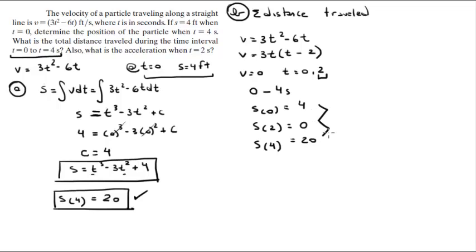To find the total distance traveled, you need to find the differences between these two. From 4 to 0 there's 4 feet, from 0 to 20 there's 20 feet, and all you got to do is add them up to get the total distance, which comes out to be 24 feet.